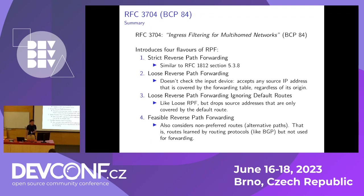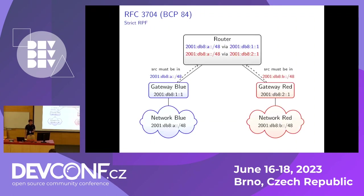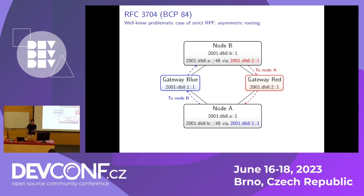RFC 3704 defines four different flavors of RPF: strict RPF, loose RPF, loose RPF ignoring default routes, and feasible RPF. Strict RPF is really the simplest and most intuitive version. Here we have a router connected to two gateways bringing to two different networks. With strict RPF, when this router receives a packet from gateway blue, it will look at the source IP address, and if this IP address belongs to network blue it will route the packet normally, and if it belongs to another network — either network red or it's not routed at all — it drops the packet.